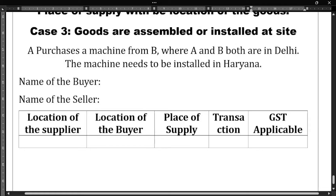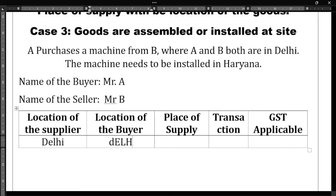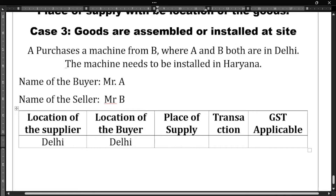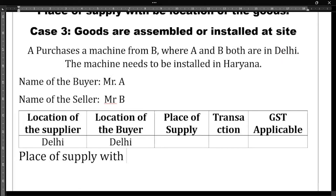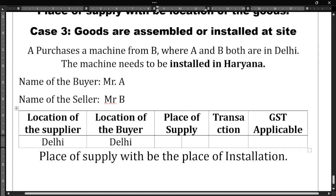A purchases a machine from B — A is the buyer because he is purchasing, and B is the seller. Both A and B are located in Delhi. However, the machine needs to be installed in Haryana. In such a case, the place of supply will be the place of installation.